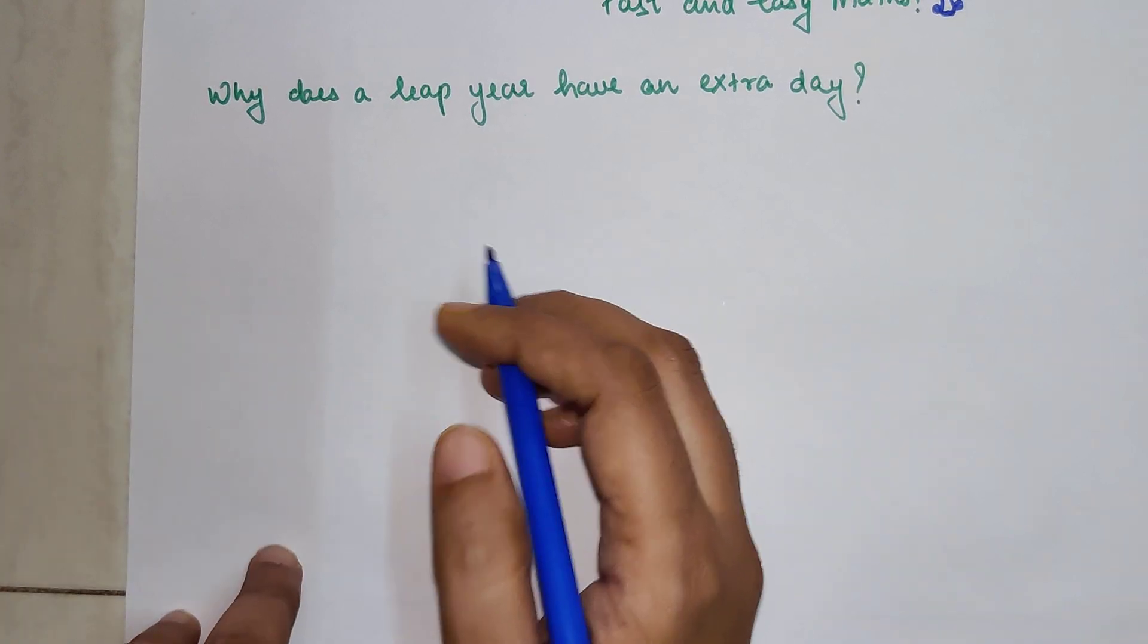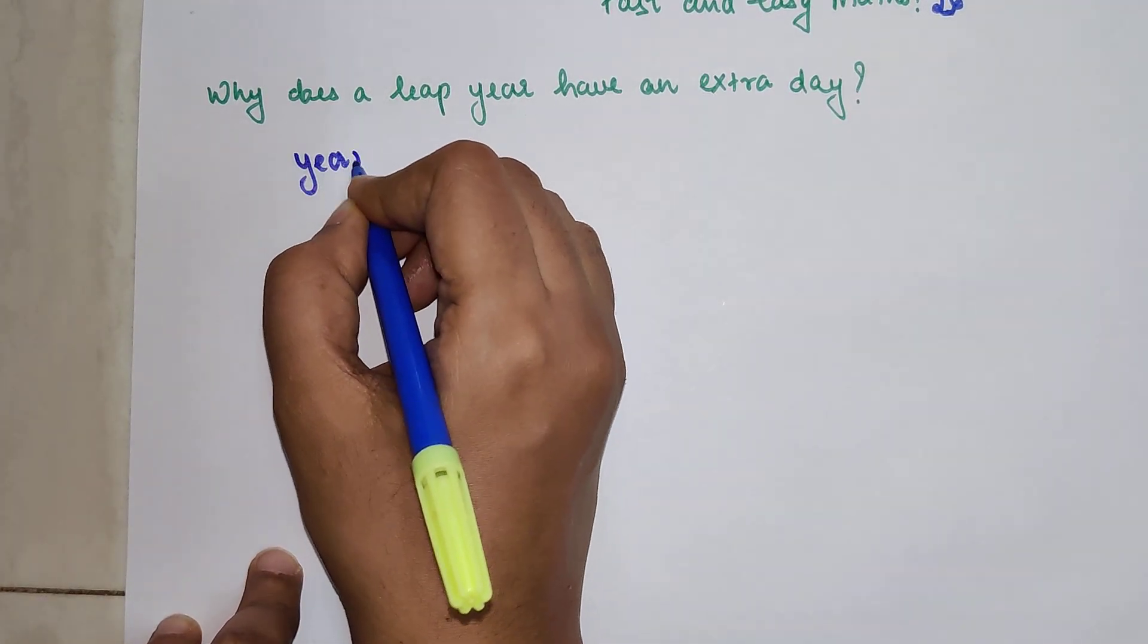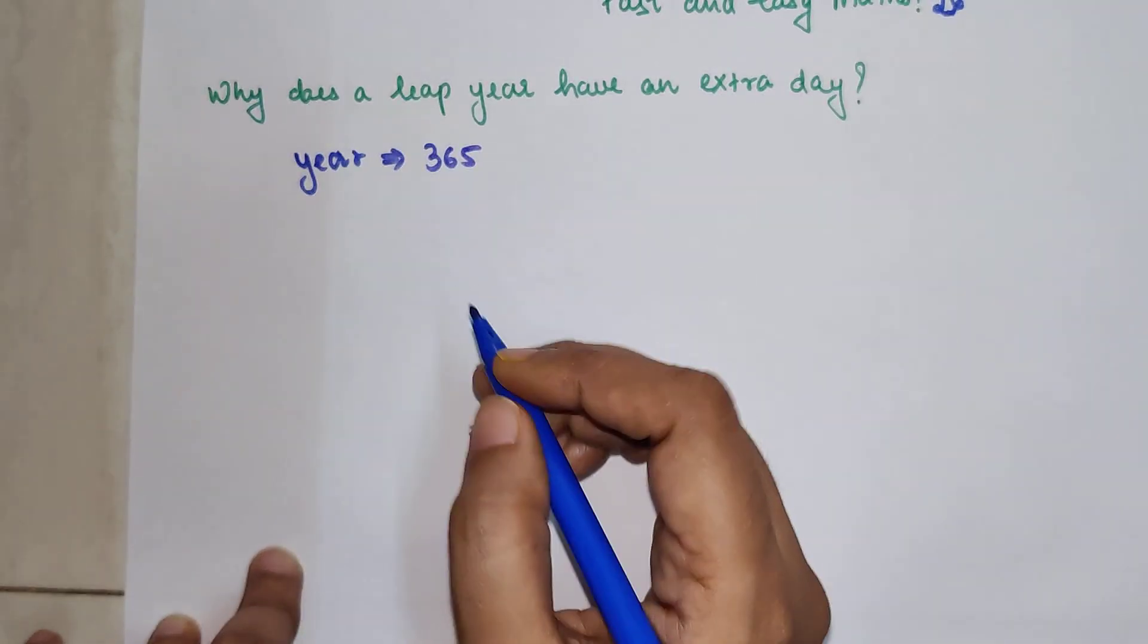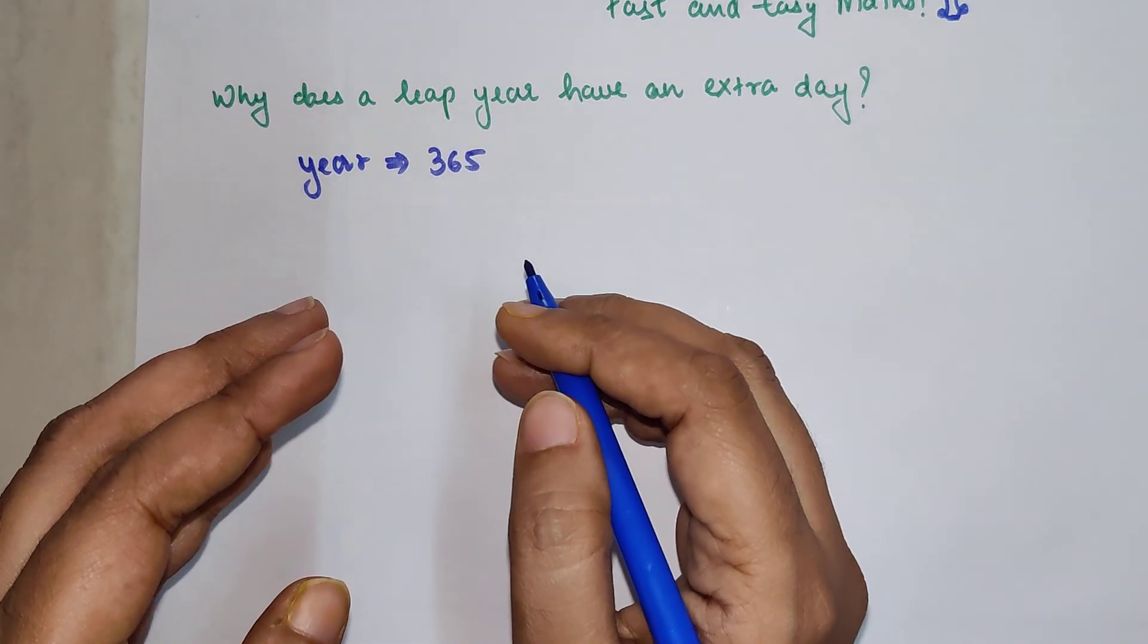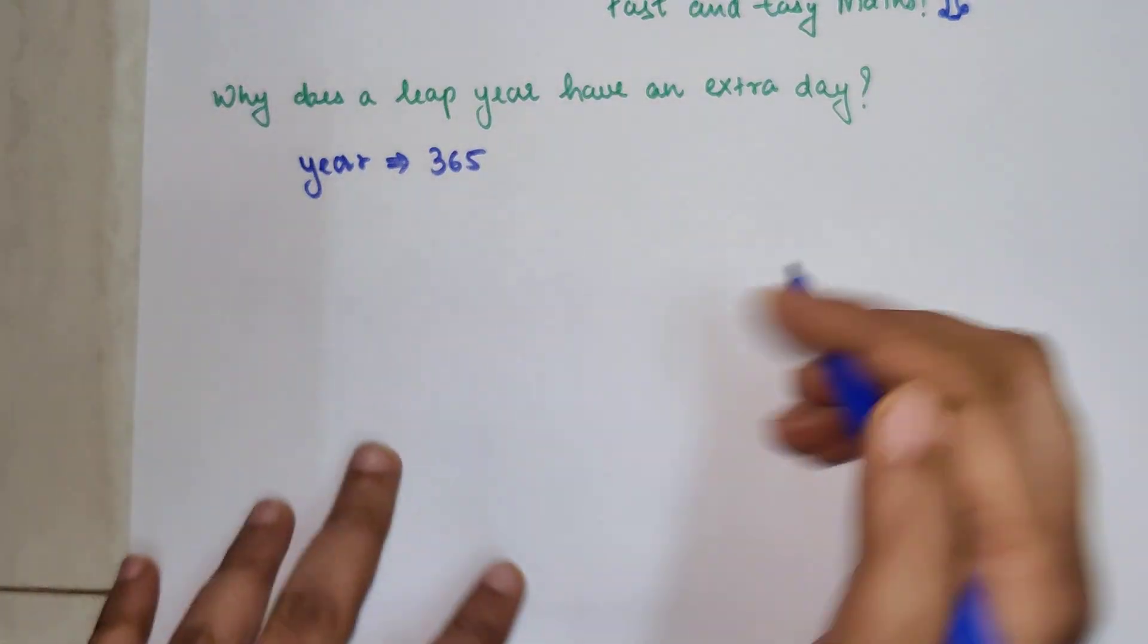So now please understand what happens. What is a normal year? A year has how many days? A general year has 365 days. Now why exactly 365?